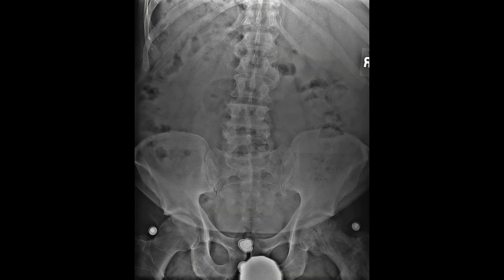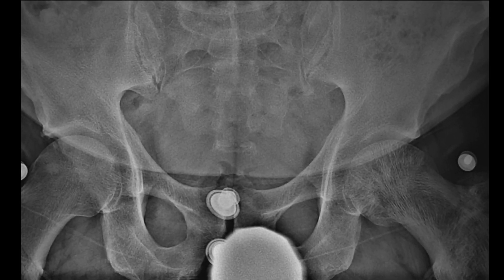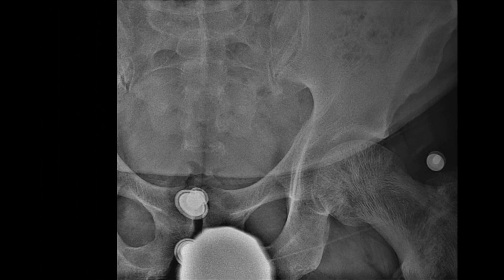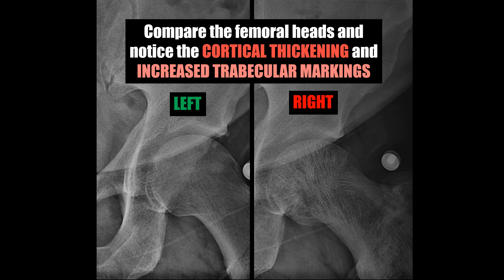Here is a subtle case of cortical thickening seen in early Paget's. Take a close look at the femoral heads — compare both and notice the cortical thickening and increased trabecular markings seen on the right.